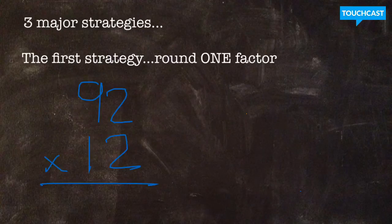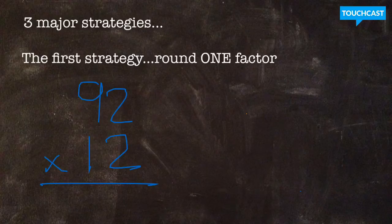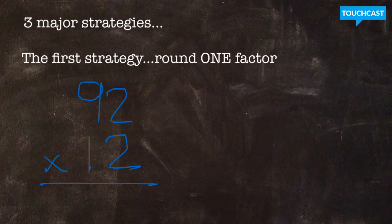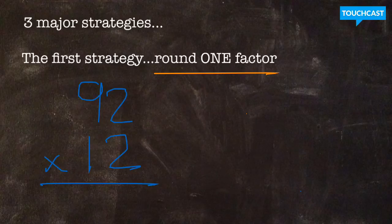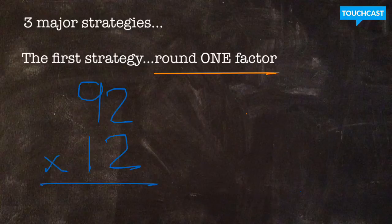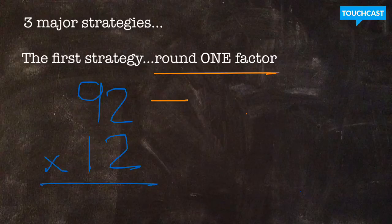The first strategy that we're going to focus on is rounding one factor in a multiplication equation to get an easy estimate. So the name of this strategy, rounding one factor, is the hint to what we're going to do or how many factors we're going to round when looking at the equation 92 times 12. We're going to choose to round one of the factors to make this easier to multiply mentally in our head.